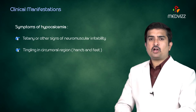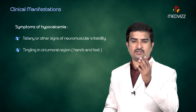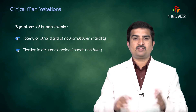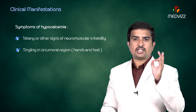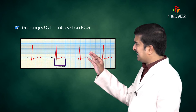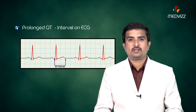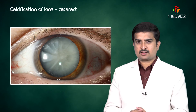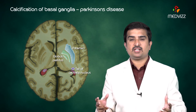Because the parathyroid gland is responsible for maintaining calcium metabolism and increasing serum calcium levels, the symptoms of hypocalcemia are predominant. These include tetany and other signs of neuromuscular irritability, tingling in the circumoral region as well as in the hands and feet. The predominant ECG finding is a prolonged QT interval. In severe cases, calcification of the lens may cause cataracts, and calcification of the basal ganglia may rarely cause Parkinson's disease.